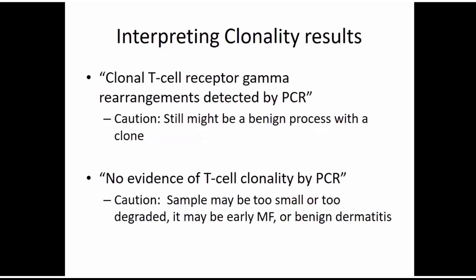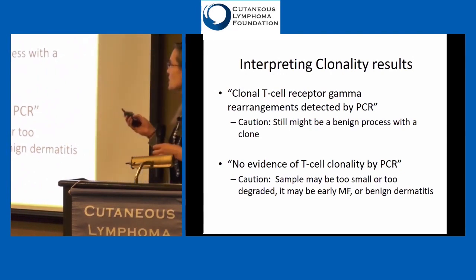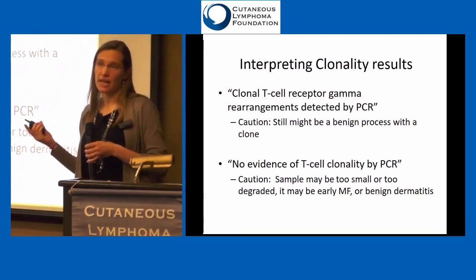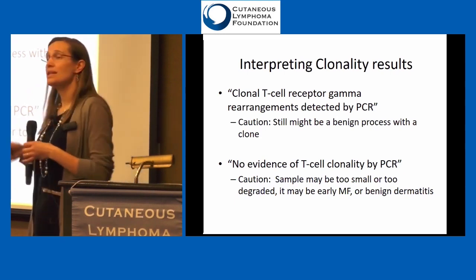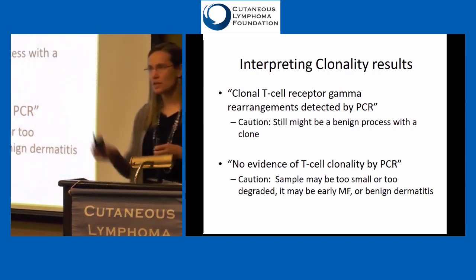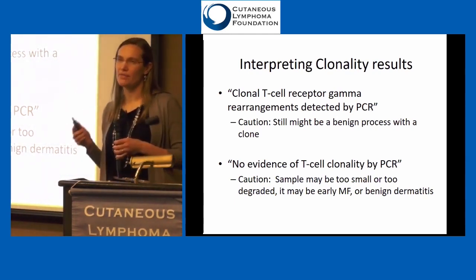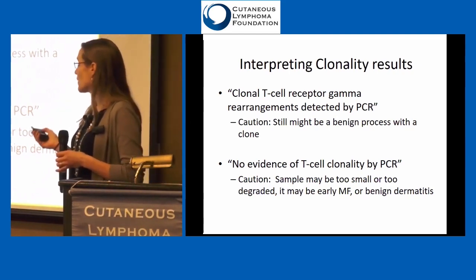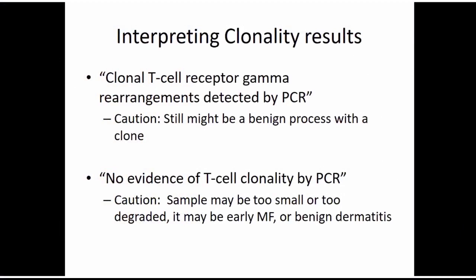We have to be careful with clonality. Some people come in and say 'they said there's a clone, that means I must have lymphoma.' That's not always true. Sometimes a clone is a very healthy response — if that red cell was the one supposed to fight the flu and you had the flu, that's doing its job. It should come back down once it's done. A benign process like an infection or drug reaction can cause a clone. And just because you don't have a clone doesn't mean we won't say it's lymphoma, because sometimes there's just not quite enough yet for the test to be positive. That's why pathologists have to put everything together — it's not just black and white.